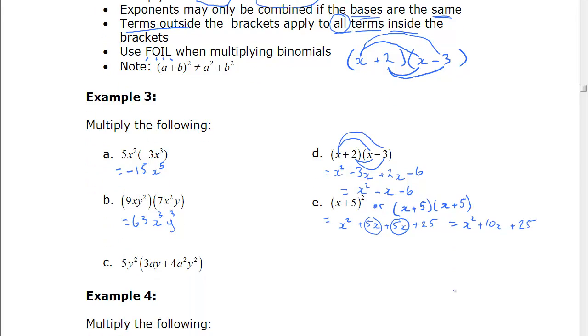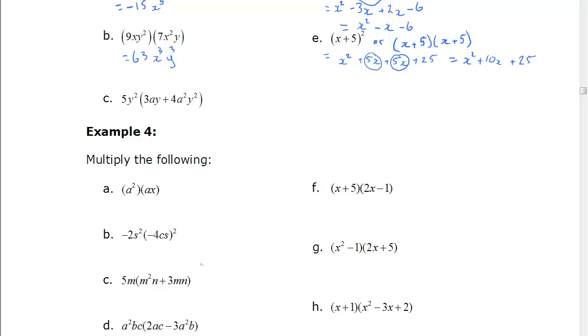Let's move our screen a little here. Example c. Here we're going to use the distributive property, which means the part outside gets multiplied with everything inside. Giving us 15ay cubed, 5 times 3. There's only a here. There's no a with the outside term, so we just keep a. And y squared and y is y cubed. 4 times 5 is 20. A squared, y squared and y squared is y to the fourth. So there's example 3.